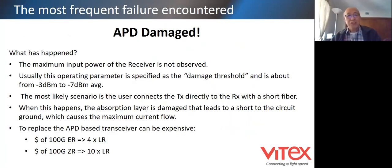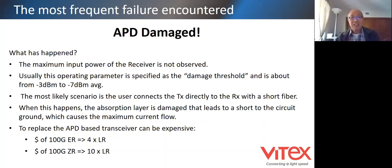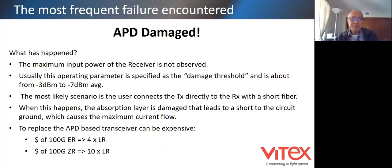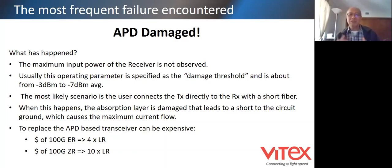The most frequent failure encountered by users is APD damage. Most of the returns for ER and CR are due to APD damage. The maximum input power of the receiver must be observed - that rule has to be followed. You cannot put in power beyond what is specified in the data sheets. Usually users don't pay attention because they're used to PIN, and once they get to APD they forget about the whole thing.